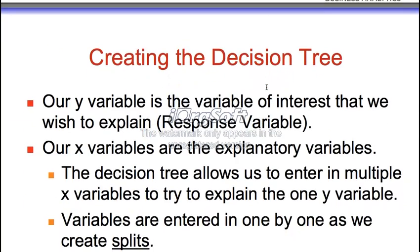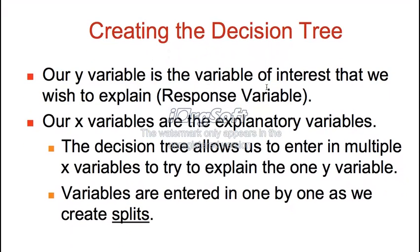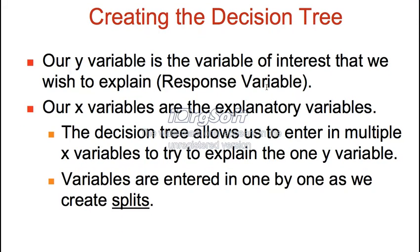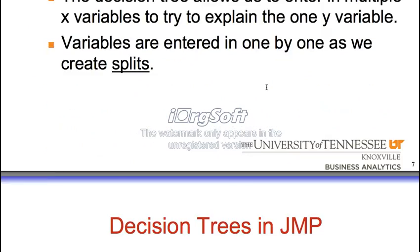Generally speaking, more decisions lead to more mistakes. If you make 10 decisions, you could have possibly made 10 mistakes. When creating the decision tree, we have one Y and multiple X's. The Y is the response, and the X's are our explanatory variables. Something to note is we don't put all the X's in at one time — it's going to put them in one by one, and these are the splits.